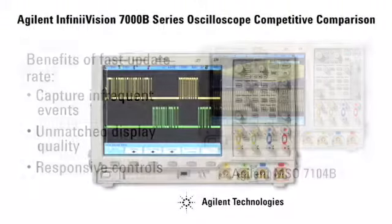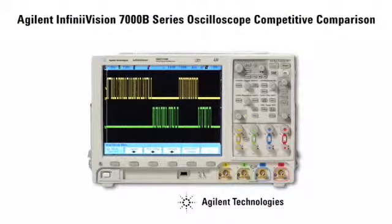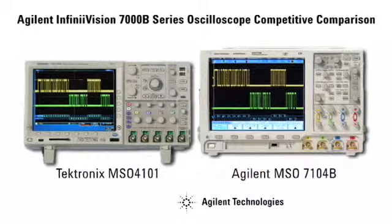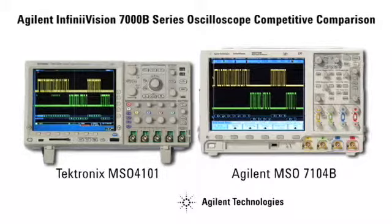Fast update rates also affect serial decode. This CAN bus signal contains an error frame that occurs once every 50 cycles, a 2% error rate. Turning on serial decoding severely limits the update rate of the Tektronix 4000 series scope, to the point that this error condition is often missed.